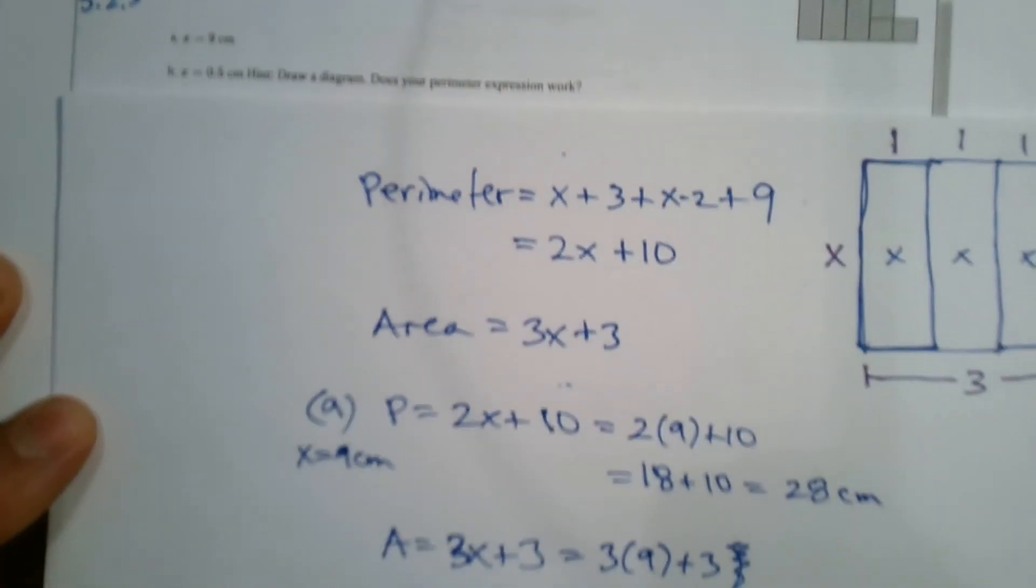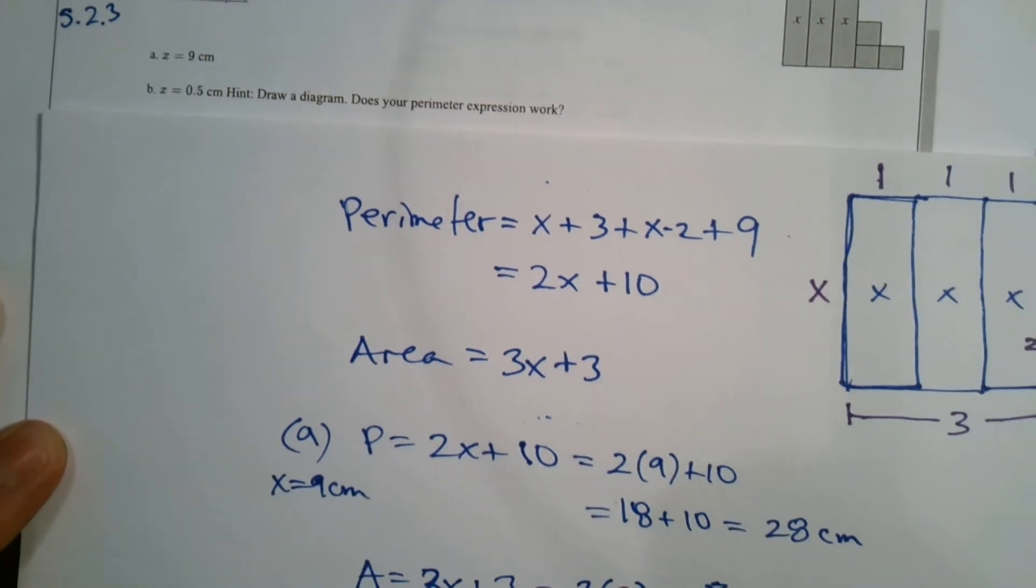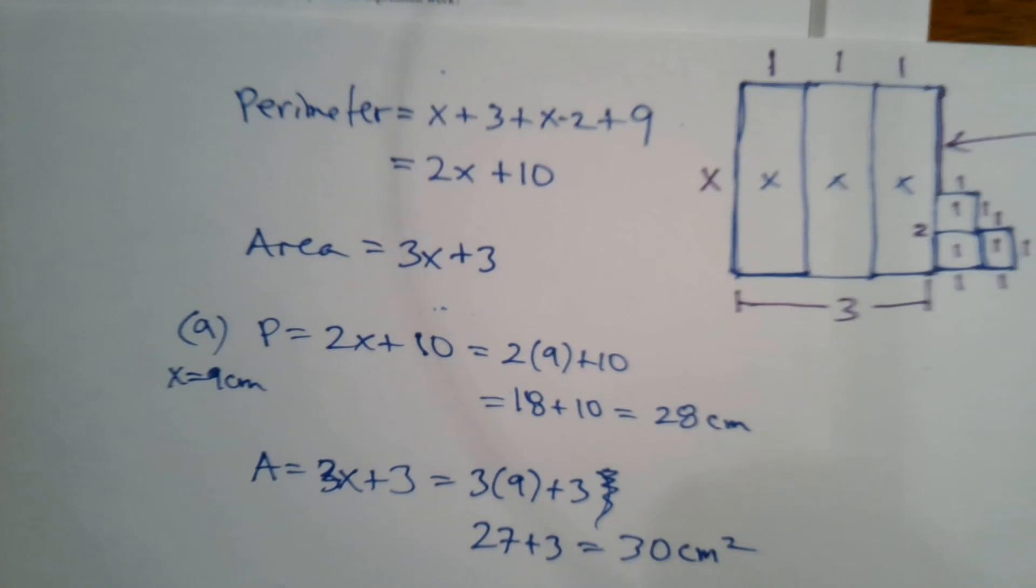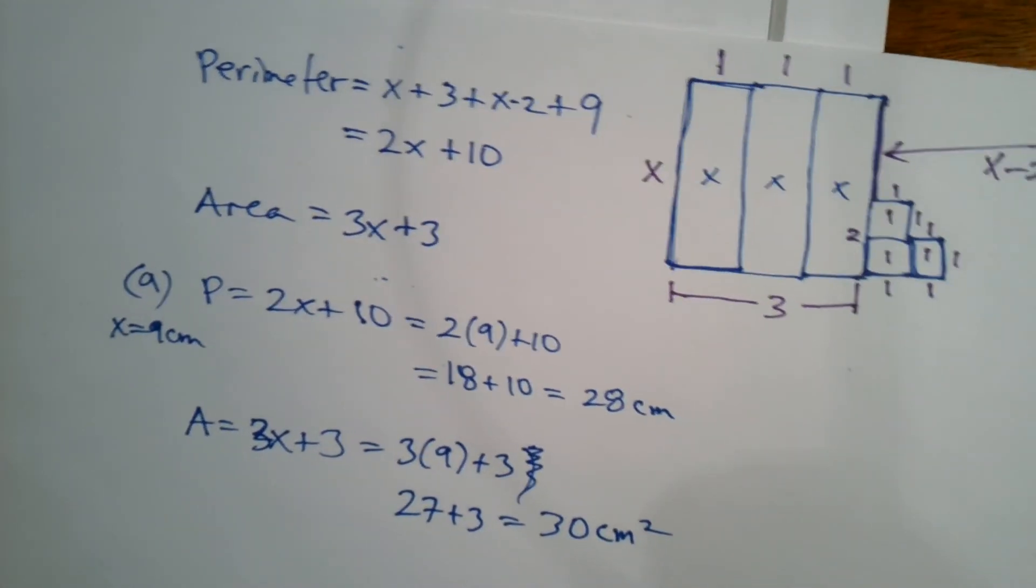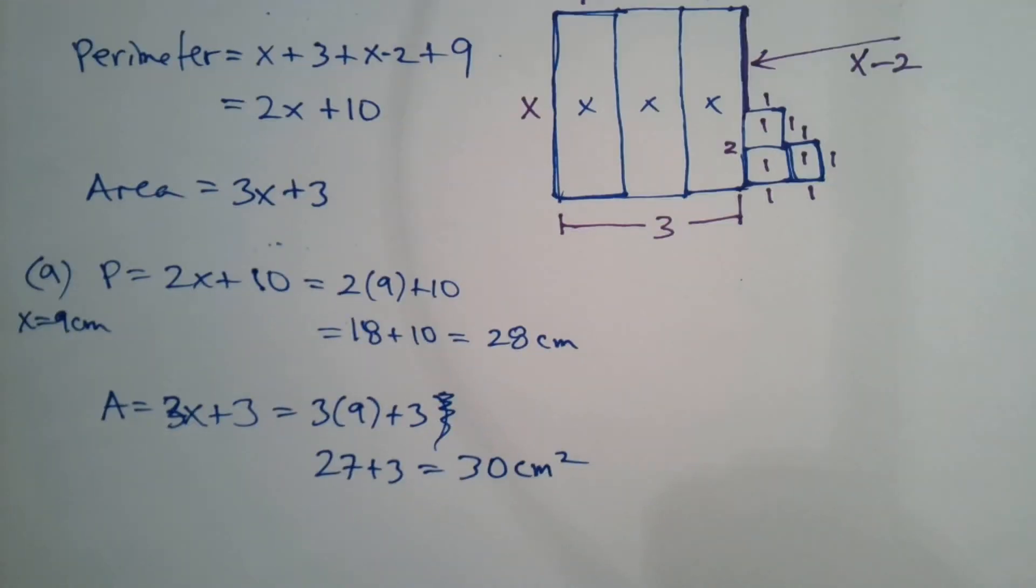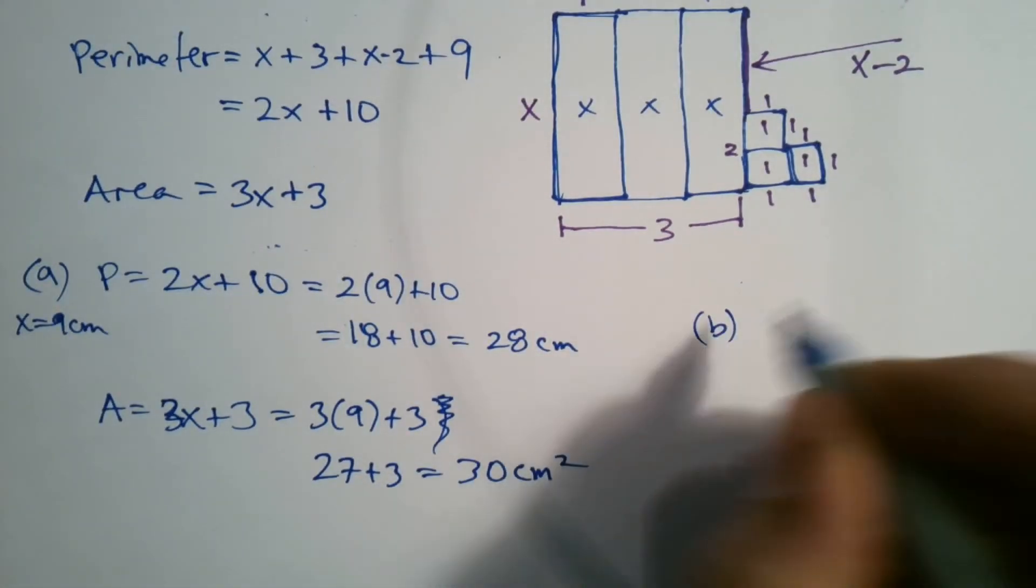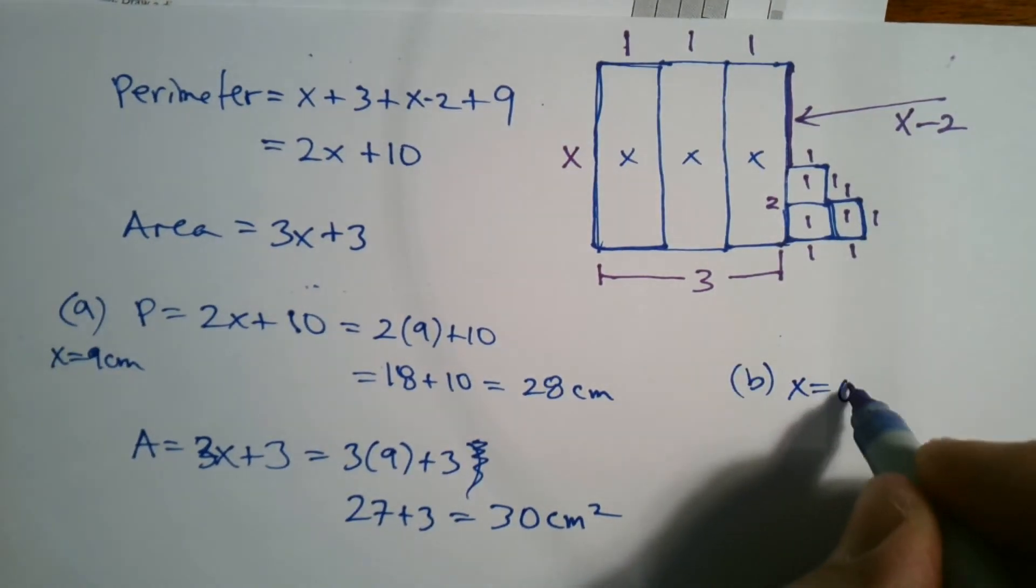Hmm, so X equals 0.5 centimeters. So if X equals 0.5 centimeters, there's a problem with that, isn't there? That's why they want us to do that hint. So if I look at my B, if X is 0.5, they're saying X is 0.5.